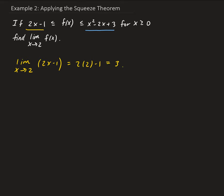Now we take the limit of the upper bound function as x approaches 2. So we have the limit of x squared minus 2x plus 3 as x approaches 2, so doing a direct substitution, that's going to give us positive 3.